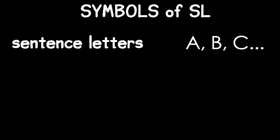Since SL is a formal language, we can specify all the meaningful symbols. We've already seen the sentence letters. You can use any letter from A to Z. That gives us 26 sentence letters. But what if we needed more than 26 atomic sentences?